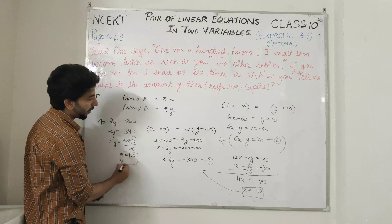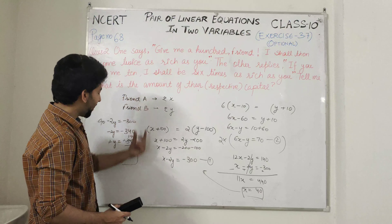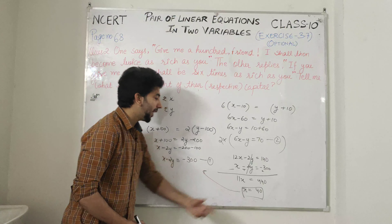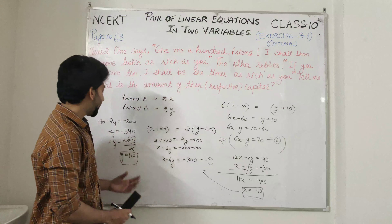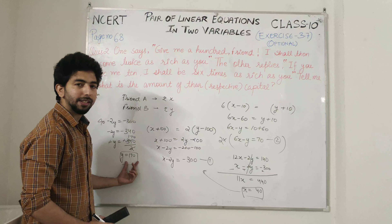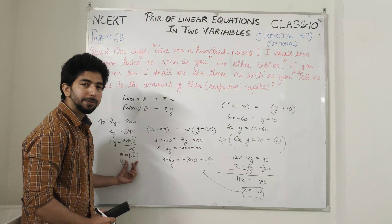तो friend A के पास कितनी amount है? Rs. 40. And friend B के पास Rs. 170. Thank you.